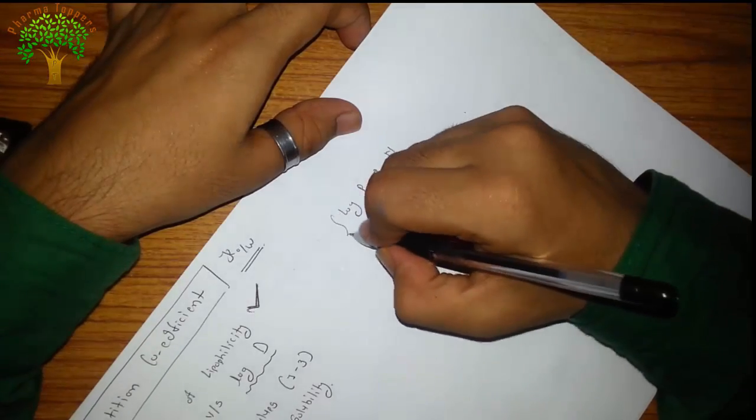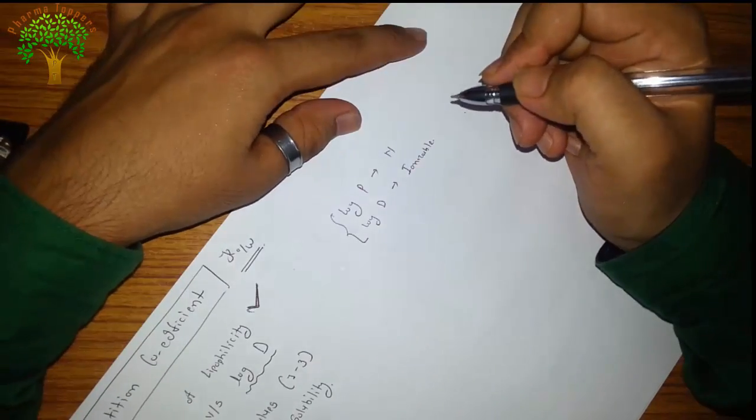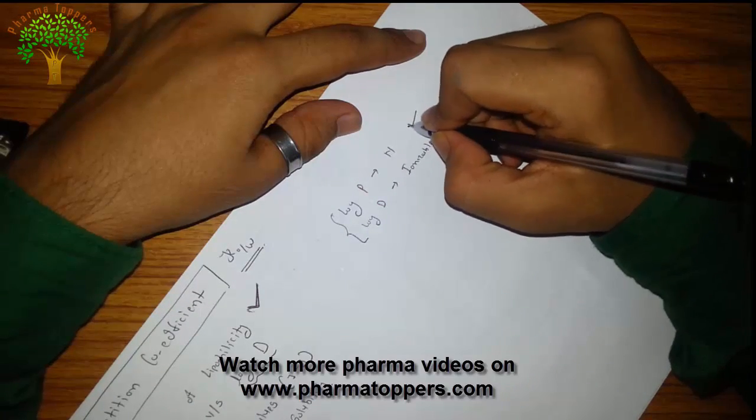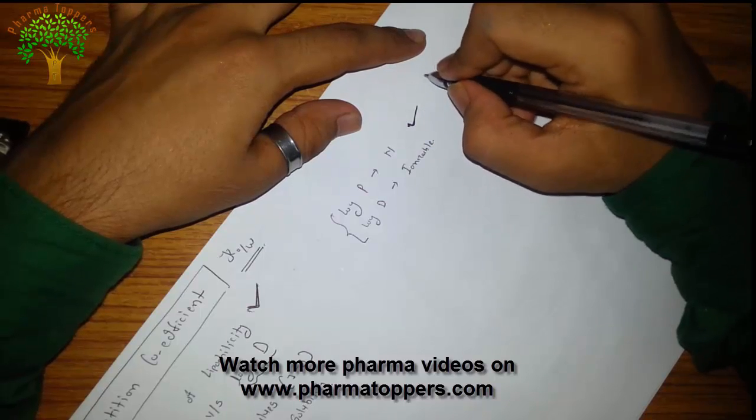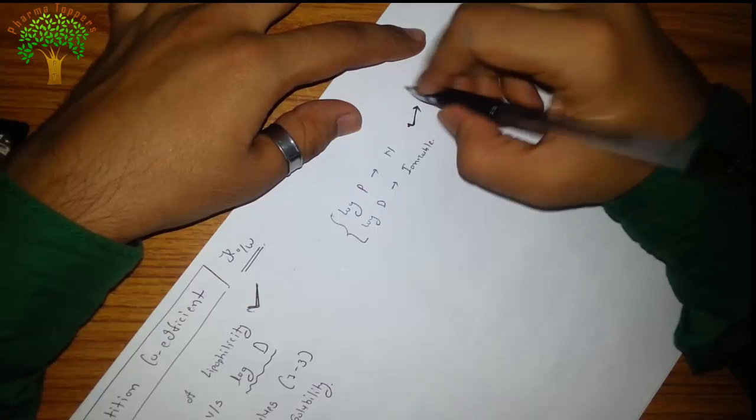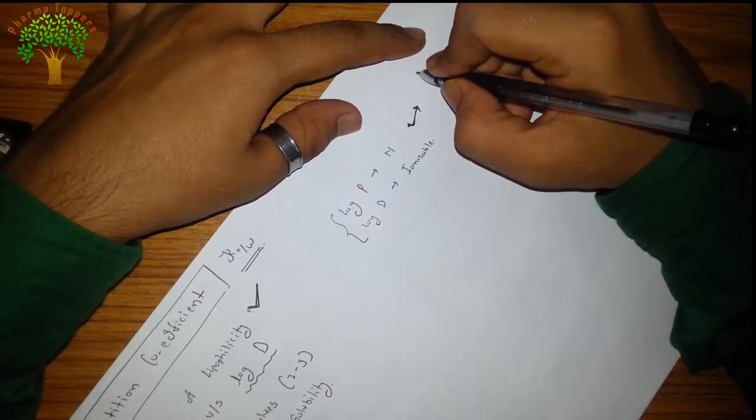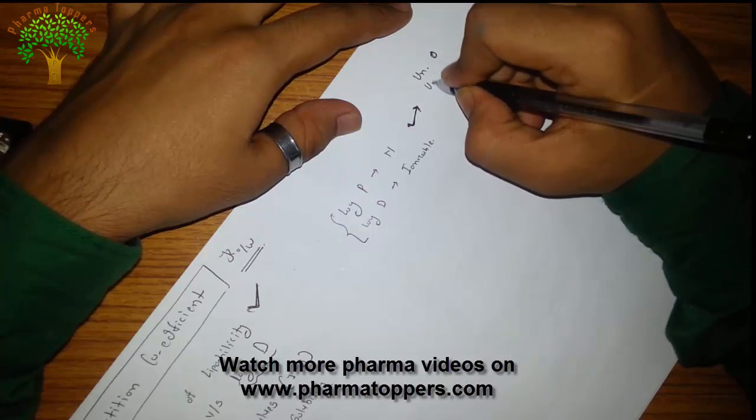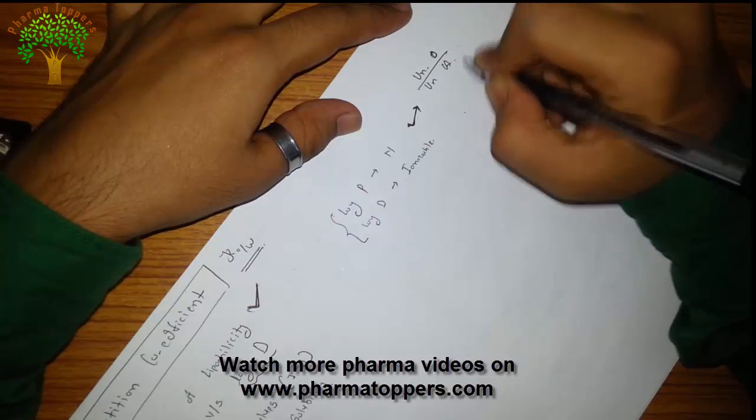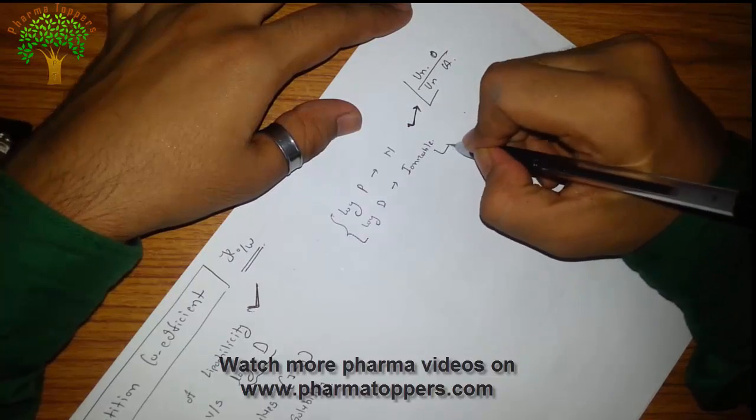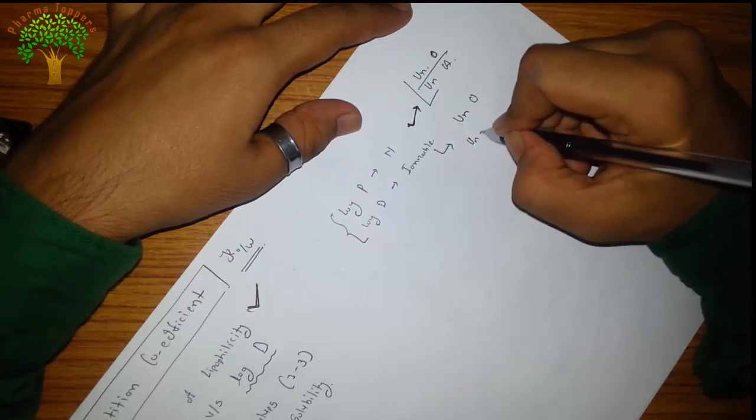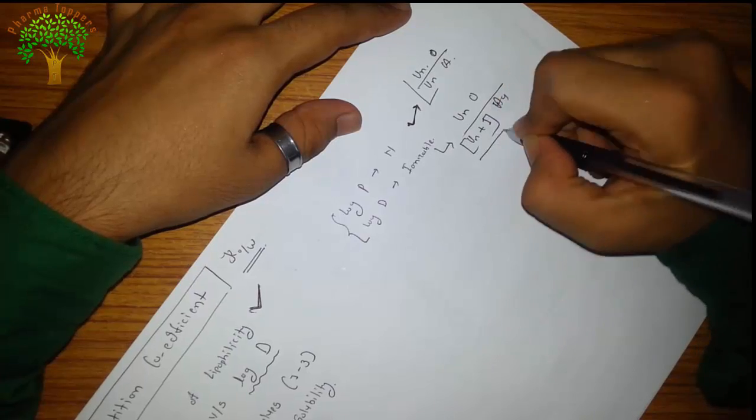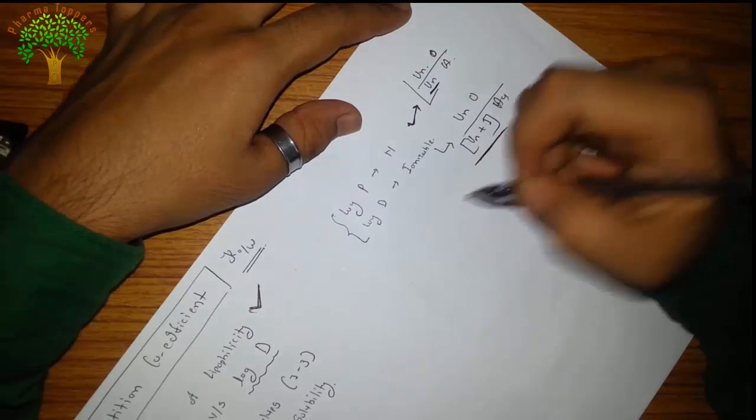In case of equations of log p and log d, only unionized species are covered for log p. The equation of log p is unionized in oil upon unionized in aqueous phase. While in case of log d, it includes unionized in oil upon unionized plus ionized in aqueous phase. So it is the major difference: unionized plus ionized for log d, only unionized for log p.